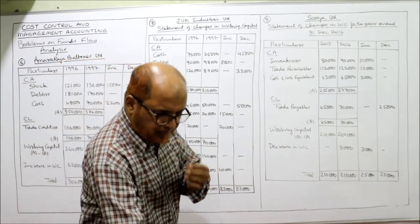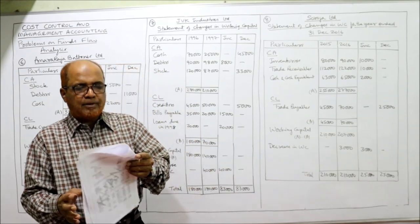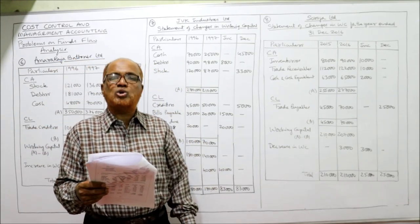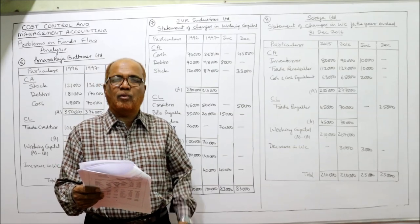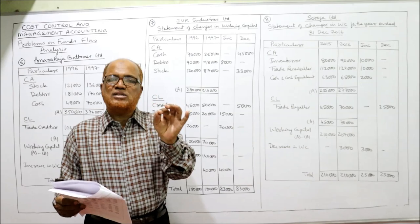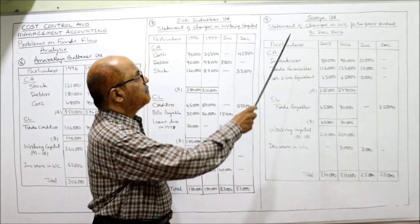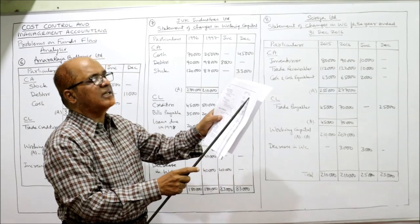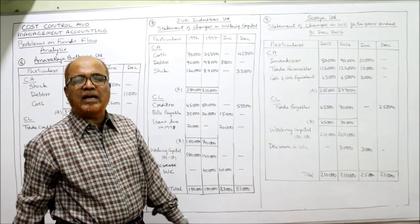This is the end of problem number 7. Now problem number 8: prepare a statement of changes in working capital for Saroja Limited from the information given below. Statement of changes in working capital for the year 2016, last year 2015, current year 2016.